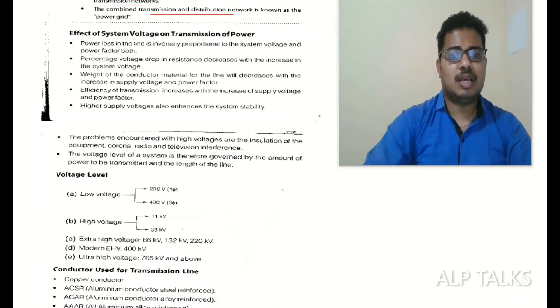Percentage voltage drop in resistance decreases with increase in system voltage. Weight of the conductor material for line will decrease with increase in supply voltage and power factor. Efficiency of transmission increases with increase of supply voltage and power factor. High supply voltage also enhances the system stability. The problems encountered with high voltages are insulation of the equipment, corona, and radio and television interference.